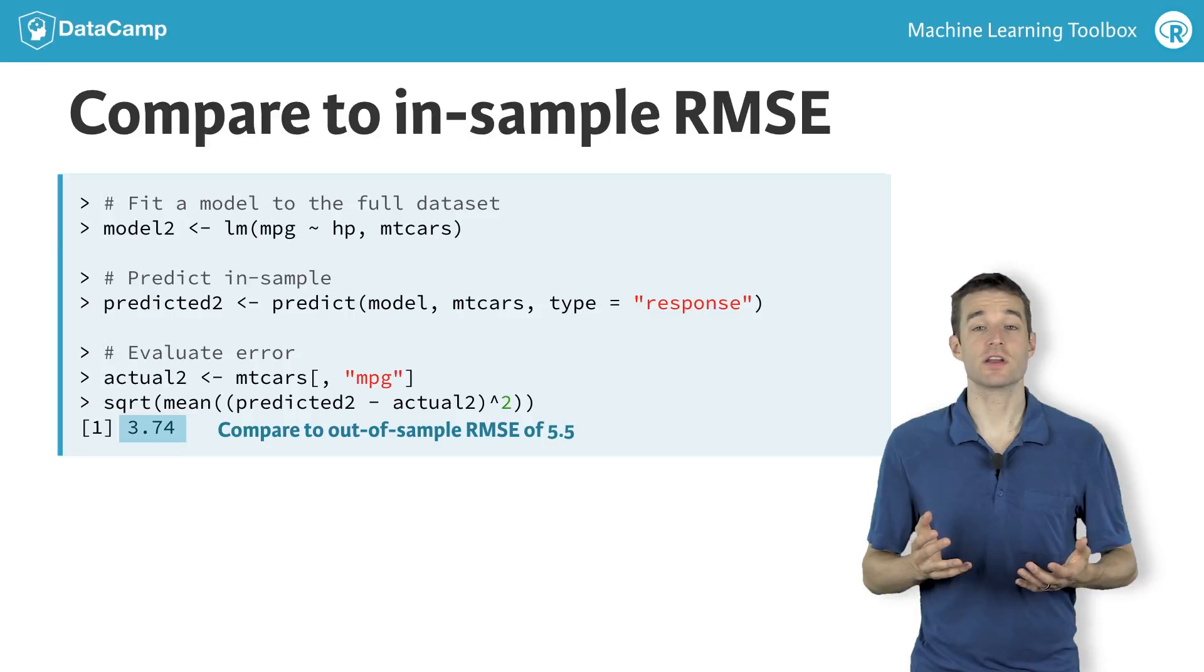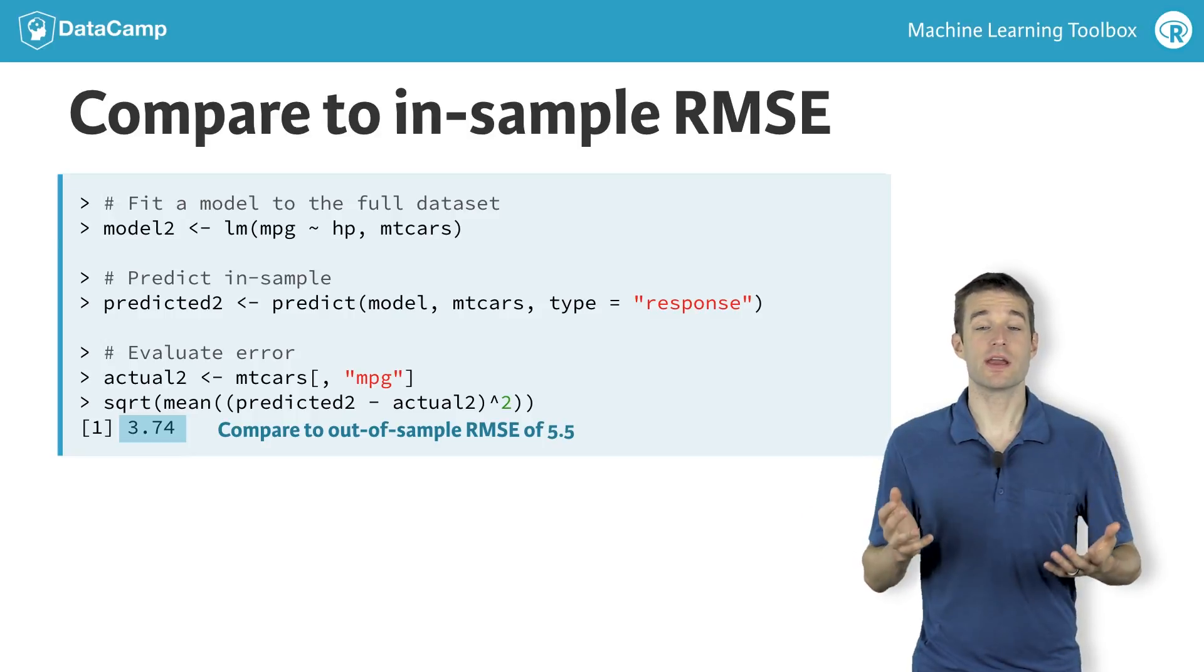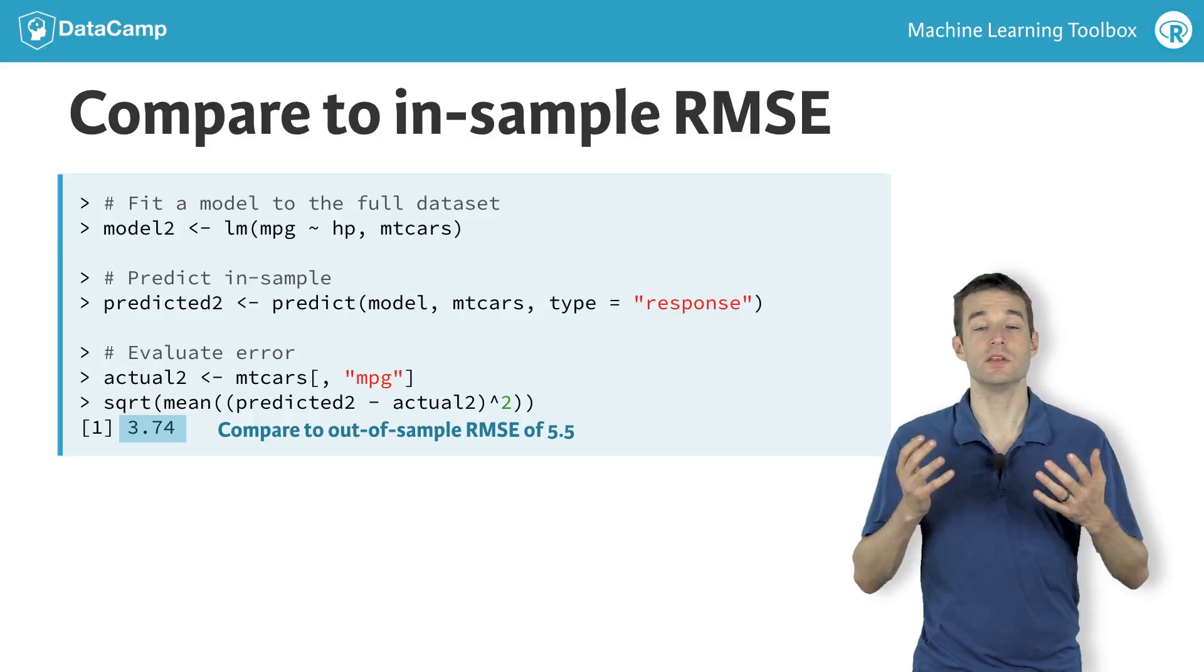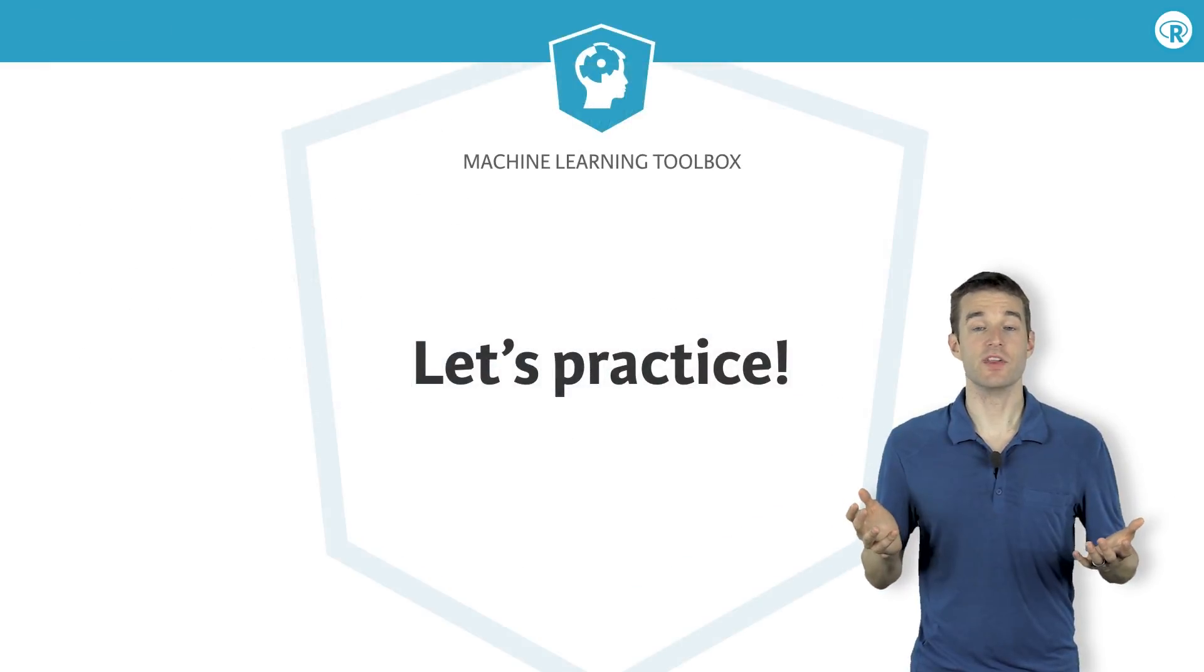It's hard to make predictions on new data, as this example shows. Out-of-sample error helps account for this fact, so we can focus on models that predict things we don't already know. Let's practice this concept on some example data.